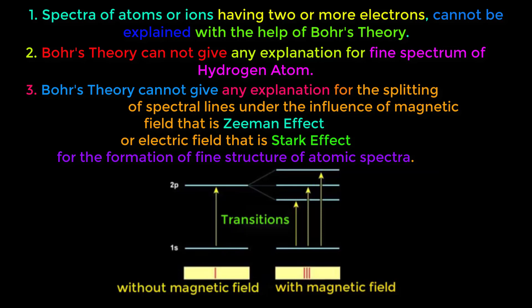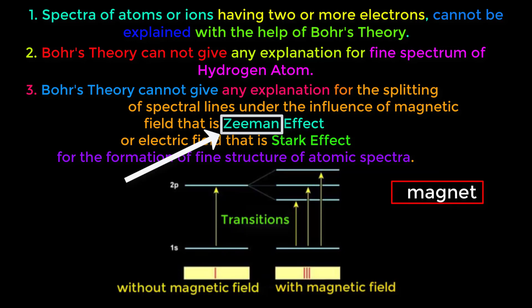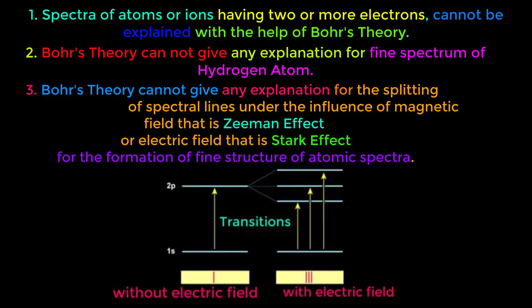The first letter of the word 'magnet' is M, and the word 'Zeeman' also has the letter M. Therefore, when we use the word magnet, Zeeman will come to mind. Again, when a spectral line is passed through an electric field, the spectral line also splits into several spectral lines. This is called the Stark effect.